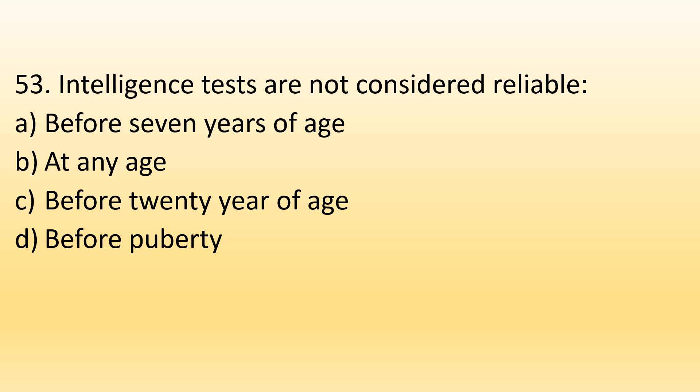Number 53. Intelligence tests are not considered reliable: Option A, Before 7 years of age; Option B, At any age; Option C, Before 20 years of age; Option D, Before puberty. The right option is Option A, Before 7 years of age. For children younger than 6 or 7 years, we cannot administer an intelligence test reliably. If we need to assess a child's intellectual abilities, we can ask parents about developmental milestones, but overall a formal intelligence test cannot be administered at that age.